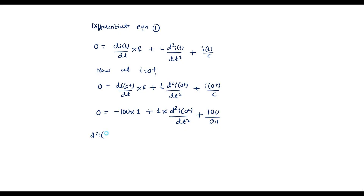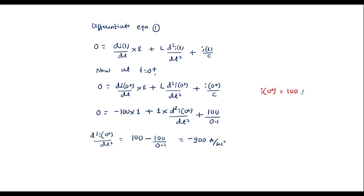Therefore, d square i of 0 plus by dt square is equal to — taking the other terms to the other side — 100 minus 100 divided by 0.1, which simplifies to minus 900 amperes per second square. Therefore, the consolidated answers are: i of 0 plus is equal to 100 amps, dI of 0 plus by dt is equal to minus 100 amps per second, and d square i of 0 plus by dt square is equal to minus 900 amperes per second square. This is the required result. Thank you for watching.